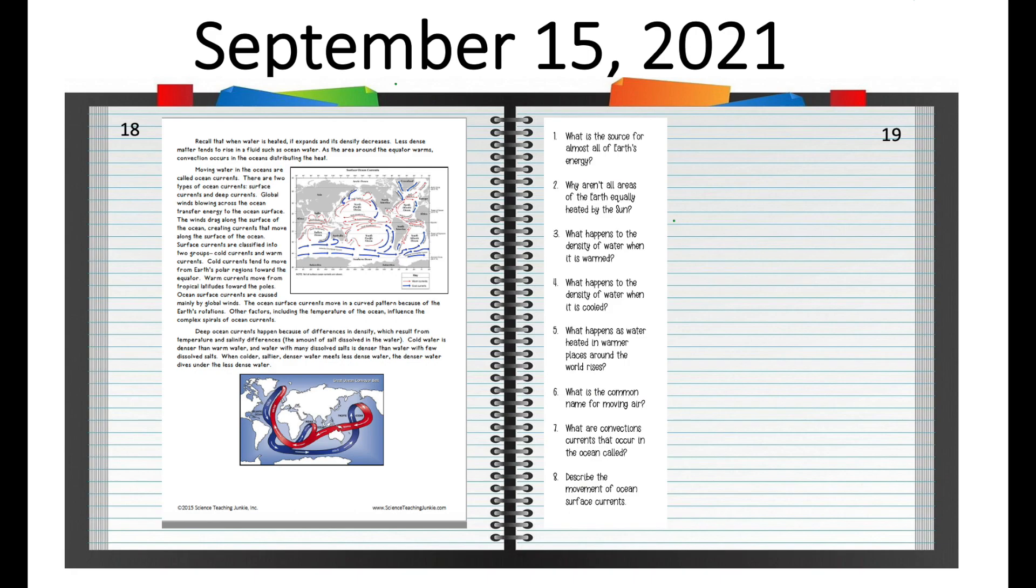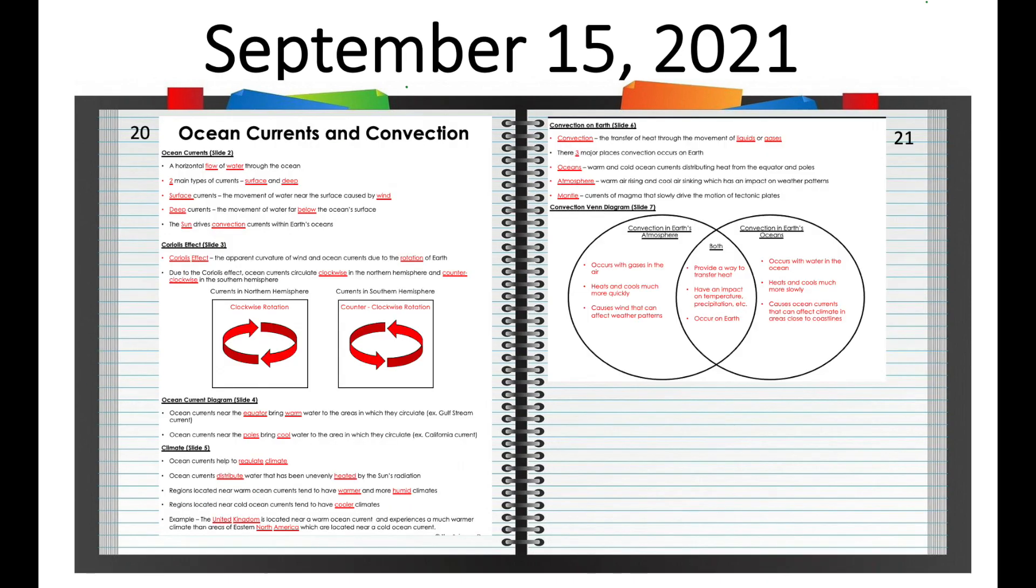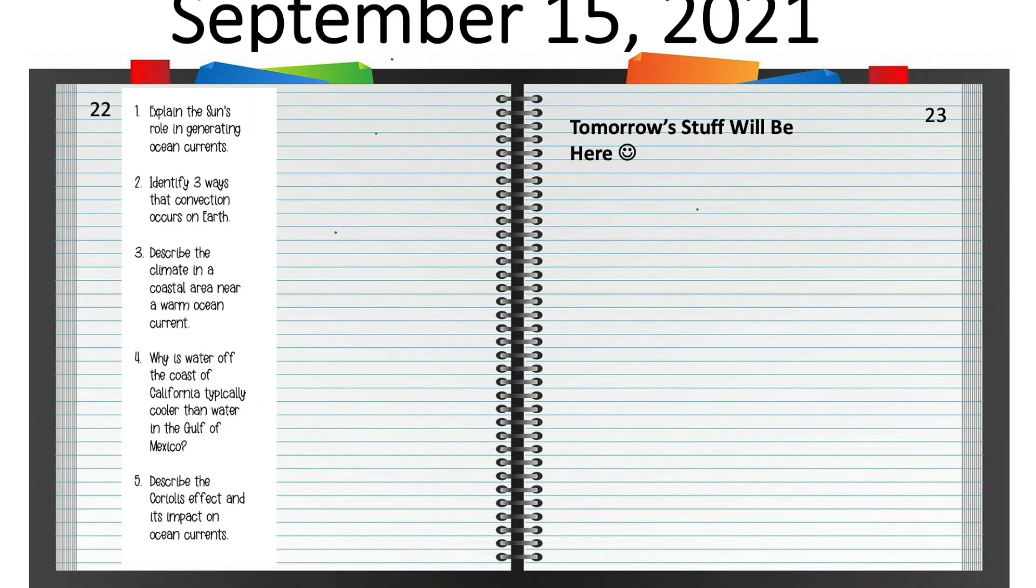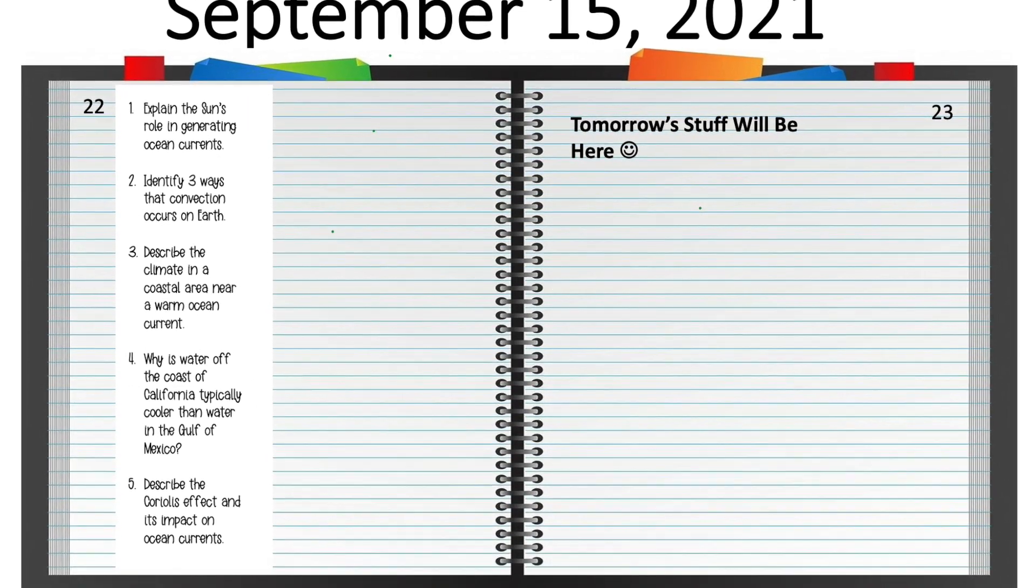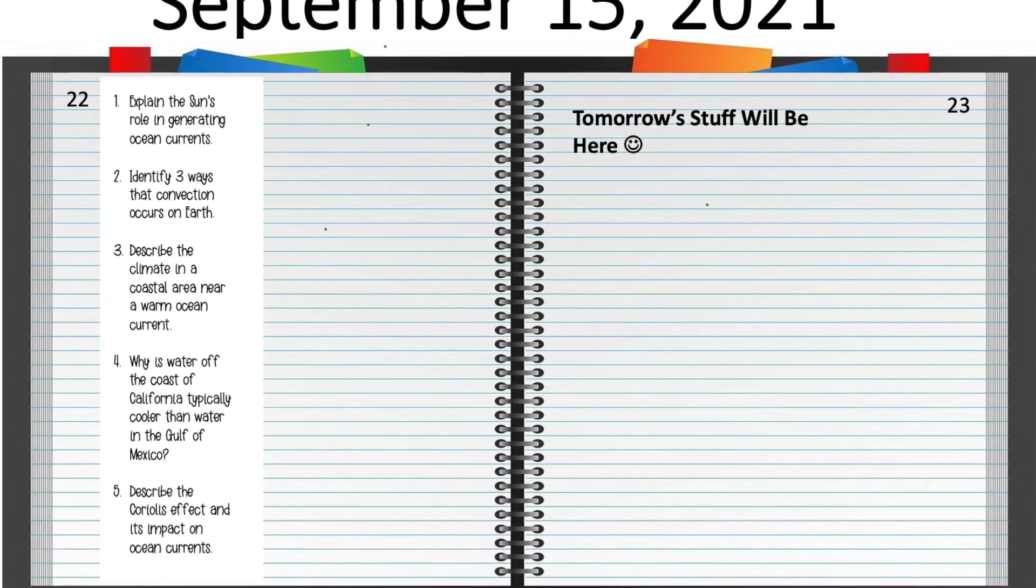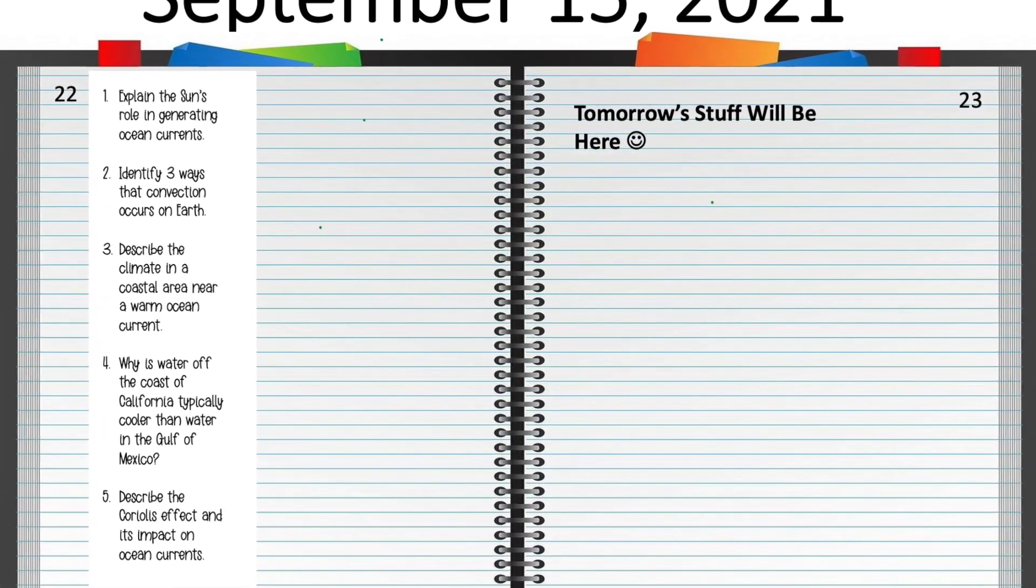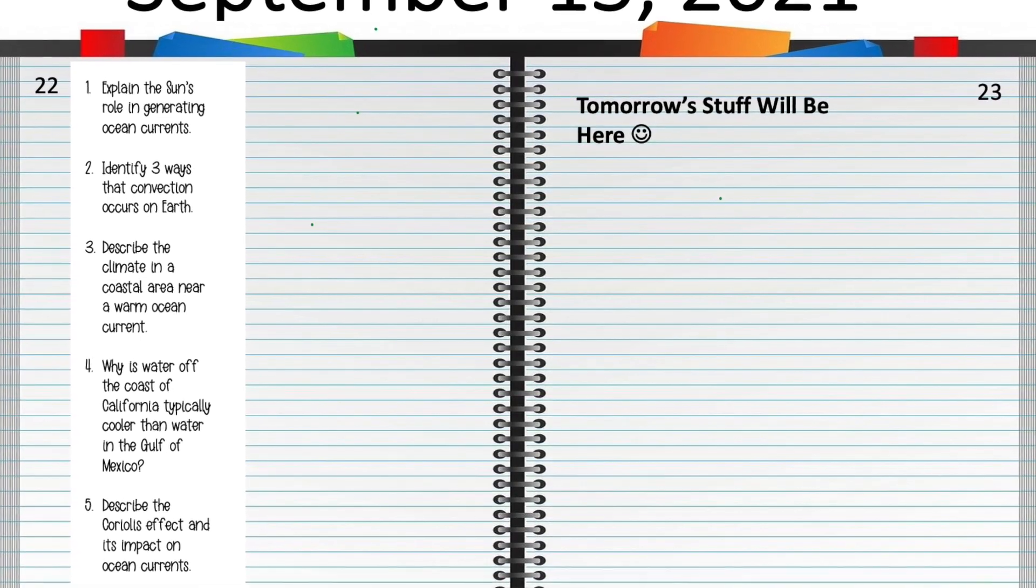17, you're going to have the page that says unequal heating of the earth. That's the beginning of the reading passage. 18 will be the second page of that reading passage with 19 being questions that go with it. We're going to go through that kind of together later in the video. On page 20, you will have ocean currents and convection. So we're going to talk about what convection is, what role the sun plays in that, and how that affects ocean currents as well. So you're going to have that on 20 and 21 with the Venn diagram. 22, same thing, you're going to have another little strip that has five questions about those notes.